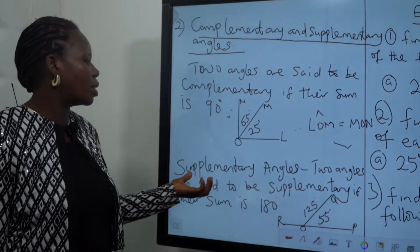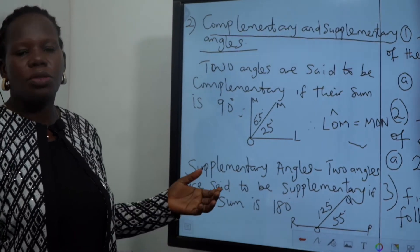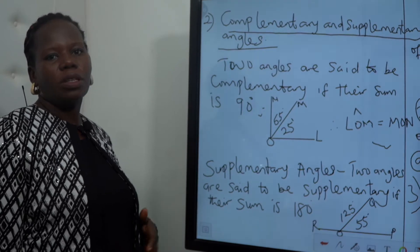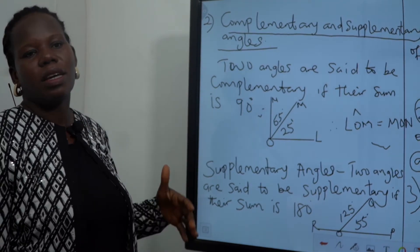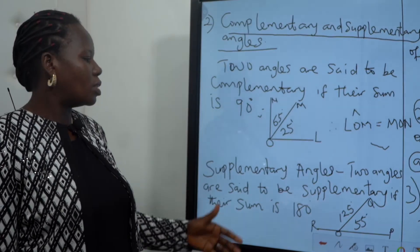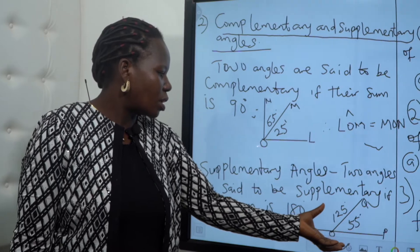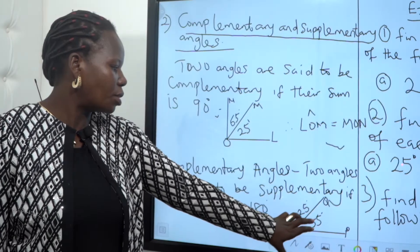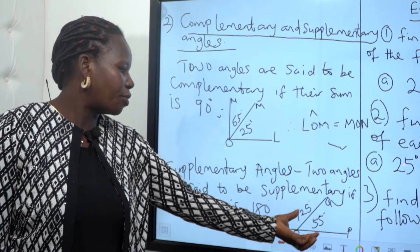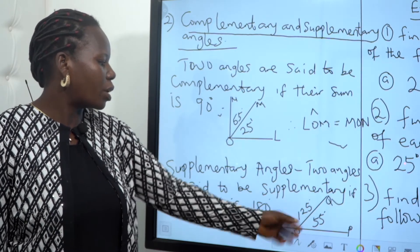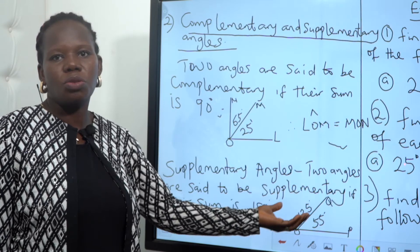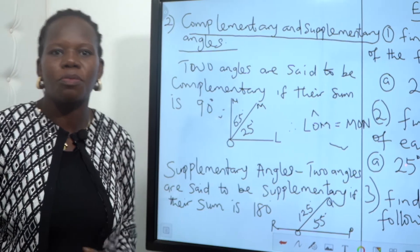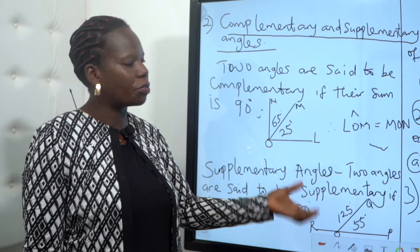The next one is supplementary angles. Two angles are said to be supplementary if their sum is 180 degrees. We know that the angle on a straight line is 180 degrees. In this case, we have two angles: one is 125 degrees and the other is 55 degrees — from angle POQ we have 55, and angle AOQ we have 125. When you sum the two angles, 125 plus 55 gives us 180 degrees. We call it a supplementary angle.